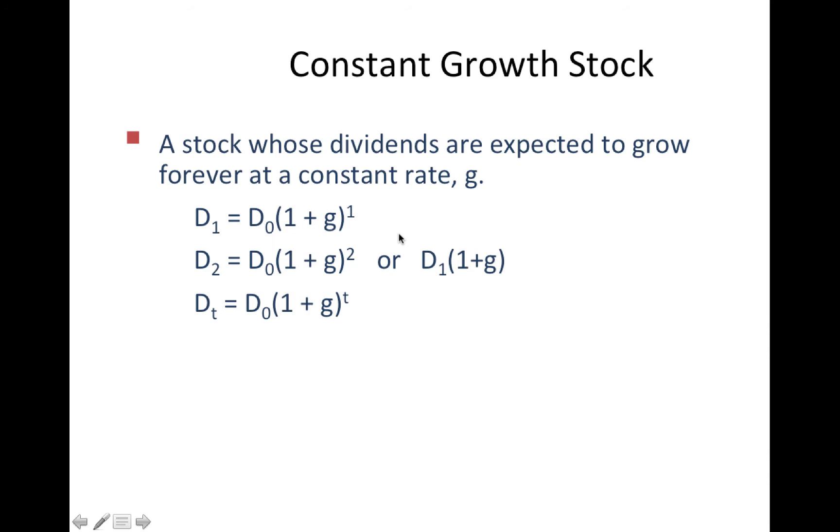Now, if we assume that these dividends are going to grow at a constant rate, and that rate could be zero, things get a lot easier because dividend one is nothing but dividend at time zero times one plus G, this growth rate. And actually, if the growth is always constant, dividend two will be dividend zero times (1+g)^2, or dividend one times (1+g). So we can calculate what dividend T will be at any time, which is basically a function of the dividend that was just paid.